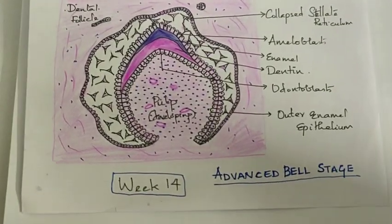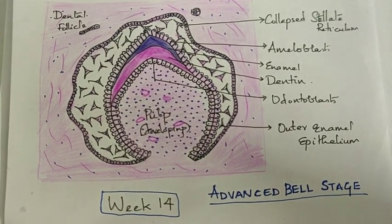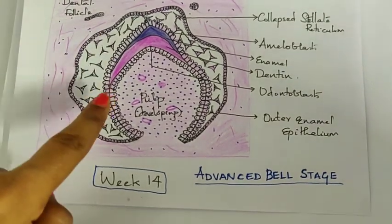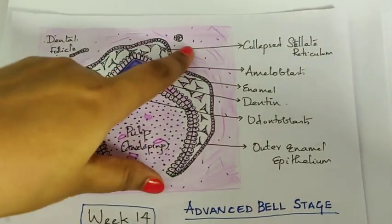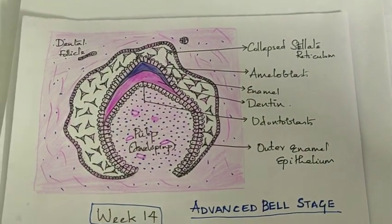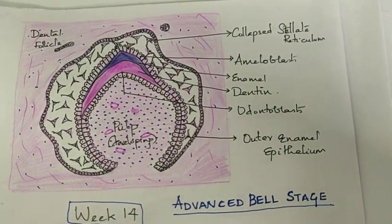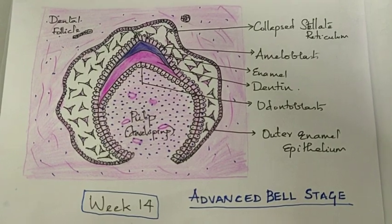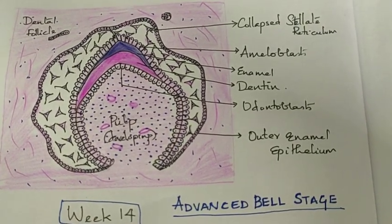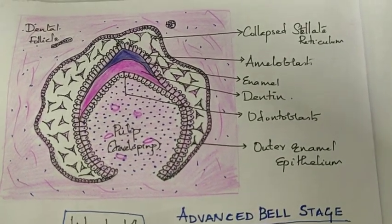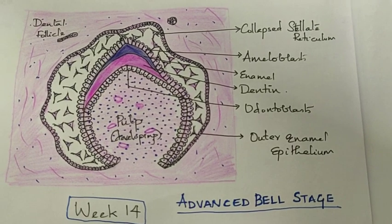As enamel and dentine start forming, the ameloblasts and the whole enamel organ get cut off from their main source of nutrition, which is the dental papilla. The dental lamina connection is lost, forming remnants of the dental lamina. The enamel organ collapses so the external dental follicle can be brought closer to the ameloblasts to provide nutrition. Root formation then begins, with the ends of the enamel organ contributing to the Hertwig's epithelial root sheath. Once the crown and two-thirds of the root are formed, the tooth starts erupting.